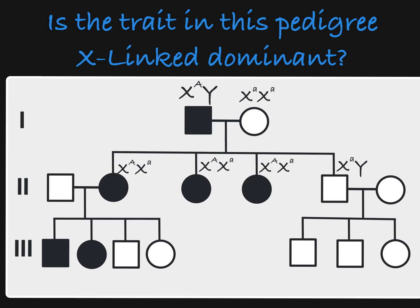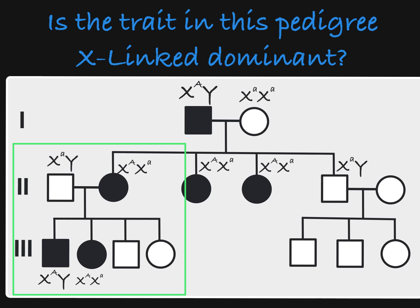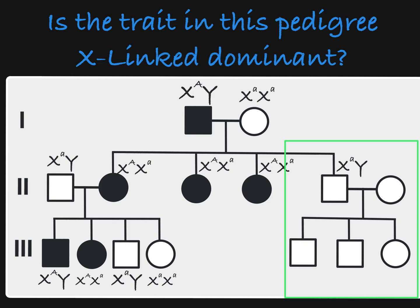And when we look at this subfamily, we see an affected mother, who would be heterozygous, and an unaffected father. These parents have some affected children and some unaffected children. This is a product of the female parent passing on either her dominant or her recessive X allele. And over here, we have two unaffected parents having unaffected children, which would be true if these parents have recessive X alleles.